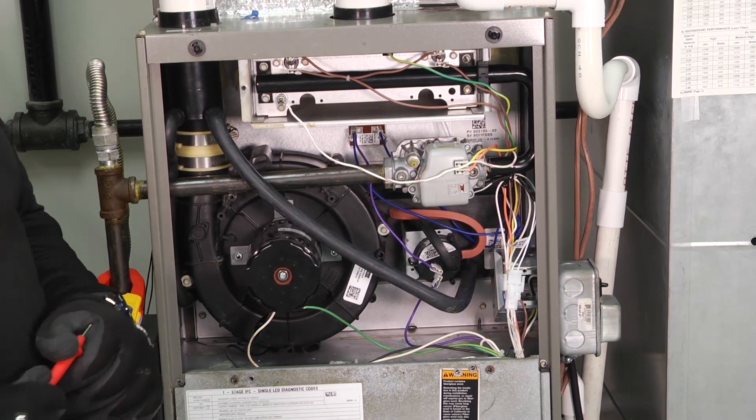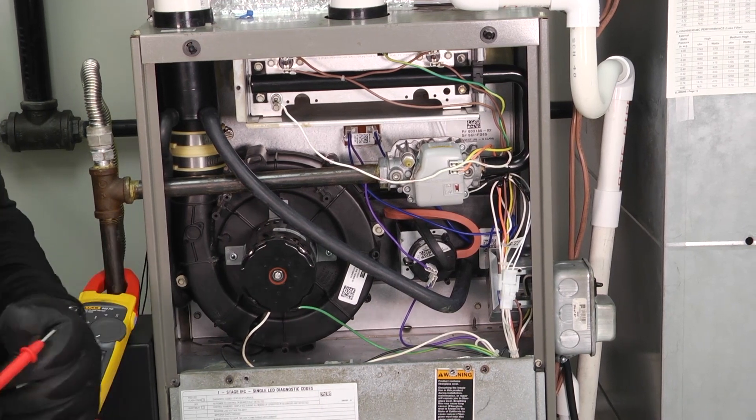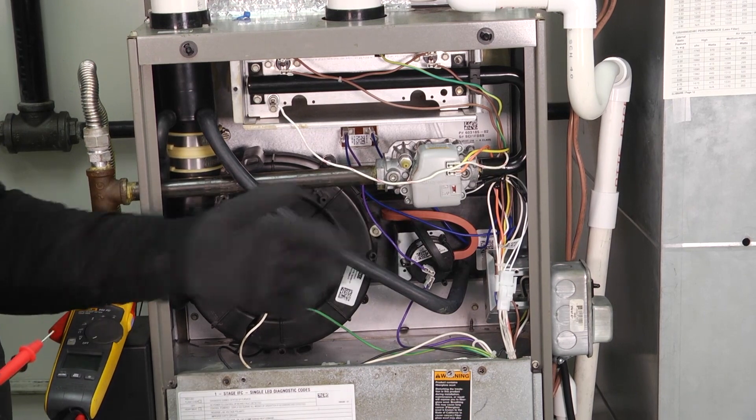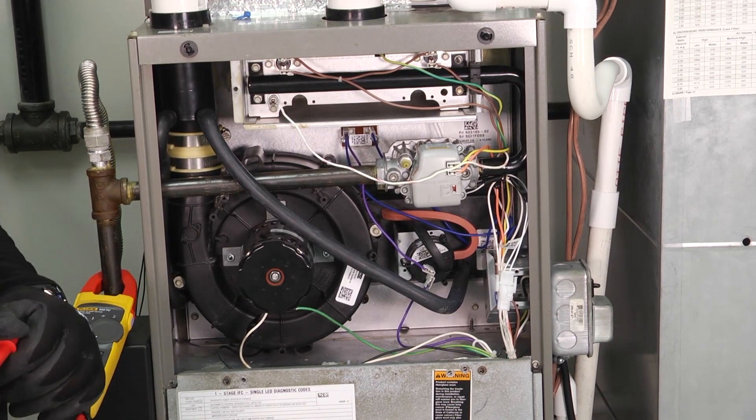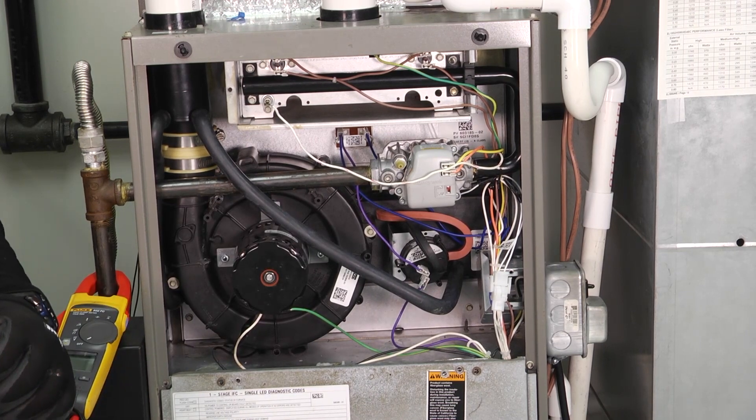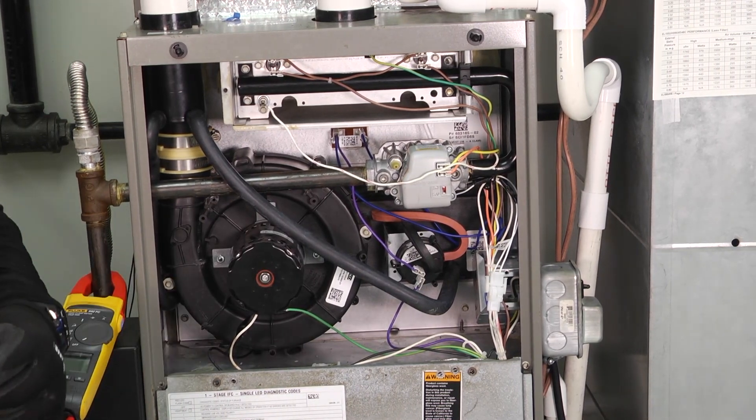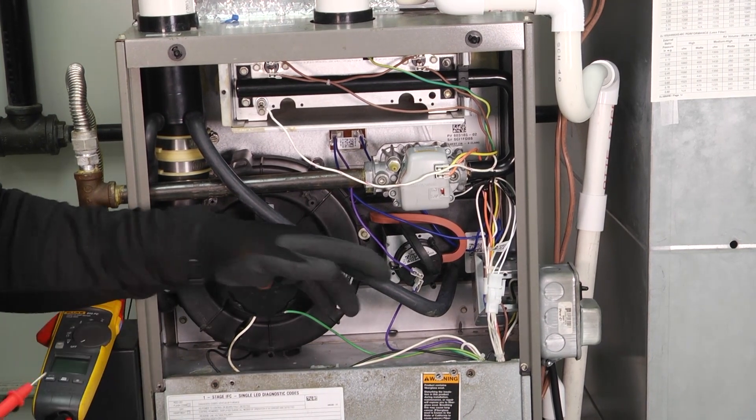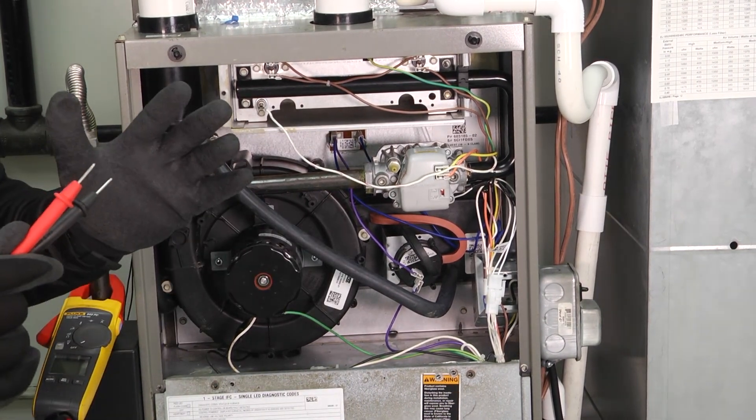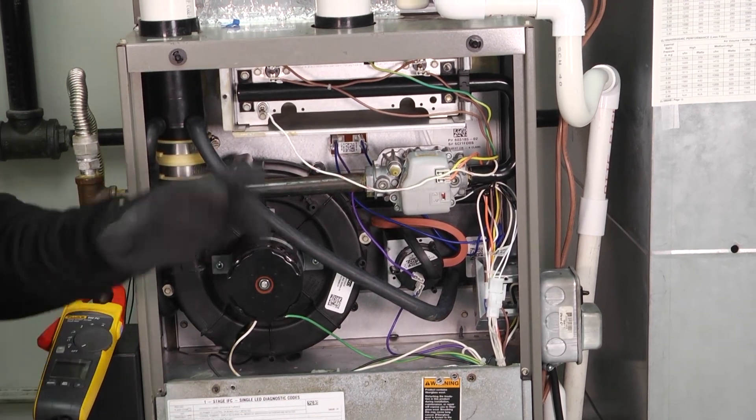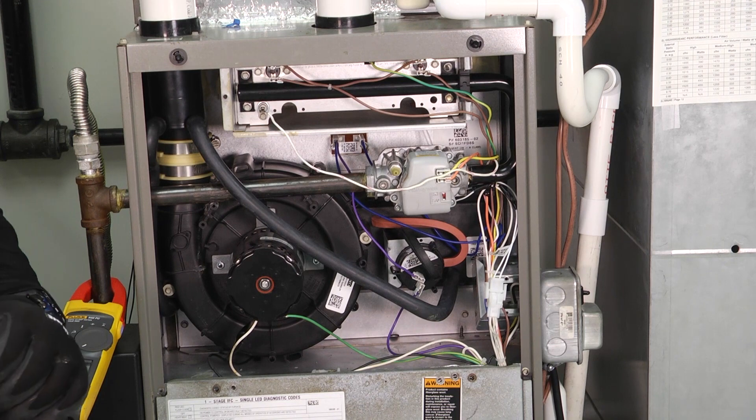One of the things that you have to keep in mind is that there are a couple different types. Silicon carbide and silicon nitride are the two different types that we have. And so be sure that you understand and you know which one you have in your system. Reason being is the resistance or the ohm tolerances from the manufacturer, which states that it's in a safe ohm range or not, are going to differ between the two.